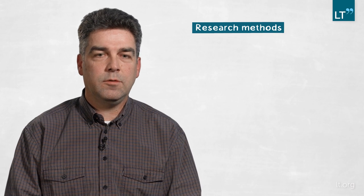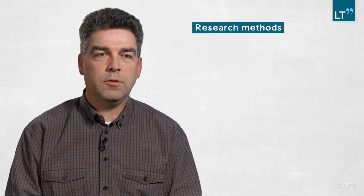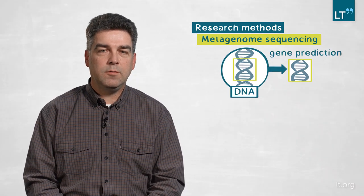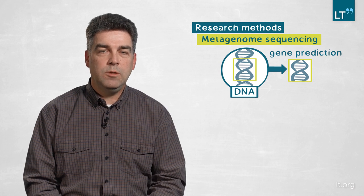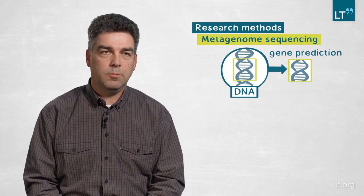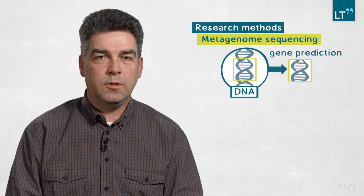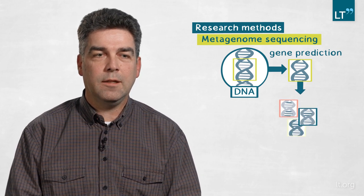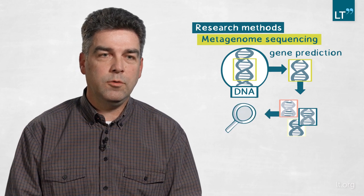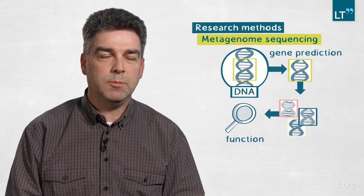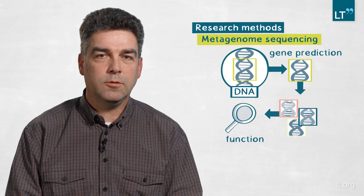The second question was what are they doing, and the method of choice is metagenome sequencing. You extract the bulk of DNA, sequence it, assemble it into larger pieces, and do gene prediction on these larger pieces. With a comparison of different databases you can then get a hint on what each gene is coding for and what function it has in nature — and this is exactly what we wanted to find out.